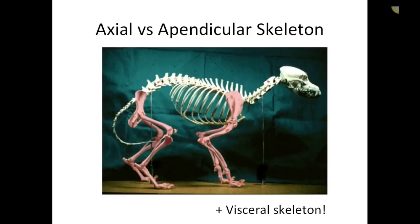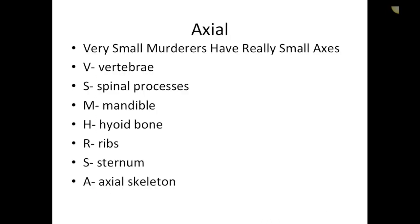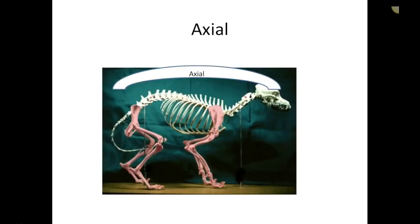We're going to go through the entire skeleton, broken up into the axial skeleton, appendicular skeleton, and visceral skeleton. The axial skeleton — one way to remember it: 'very small murderers have really small axes.' Within the axial skeleton we have the vertebrae, spinal processes, mandible, hyoid bone, ribs, and sternum. I won't be too specific on which belongs to which section, but it might help you in your studying.